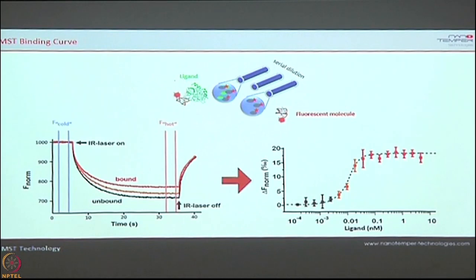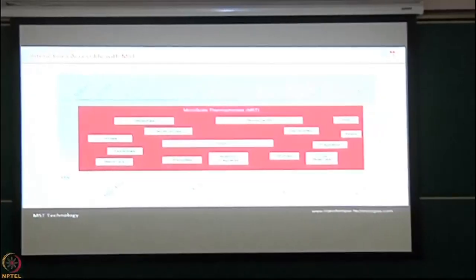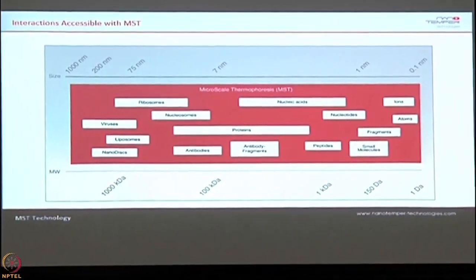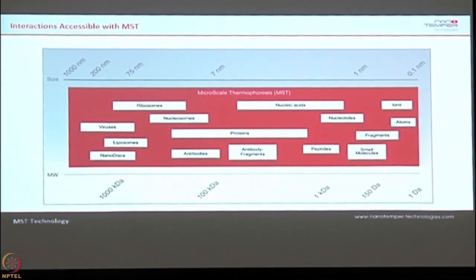The biggest advantage is you are using smaller volumes with no buffer interferences and no limitation on sizes. You can work with a wide variety of samples — from ionic interactions to liposome interactions, nanodiscs, any kind of interactions can be studied in this instrument. Even ionic interactions at Dalton scale, or liposomes and ribosomal complexes in the mega-Dalton range — the technique works very nicely for all of these.